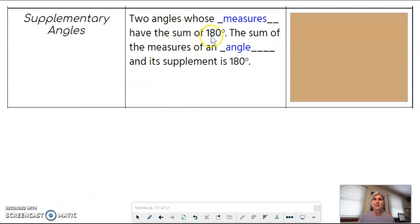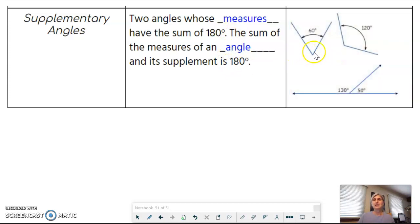Supplementary. Two angles whose measures have the sum of 180. The sum of the measures of an angle and its supplement is 180 degrees. Likewise, we have a pair of non-adjacent angles. 60 plus 120. Add them together, you get 180. That's supplementary. The bottom, we have a pair of what we call adjacent. They're sitting side by side. 130 plus 50. That is supplementary. They add to 180.